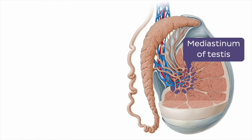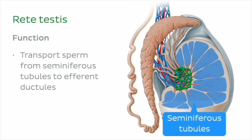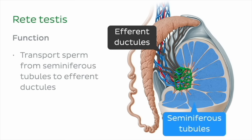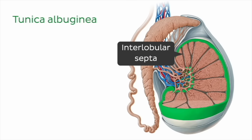Located within the mediastinum of the testes is another delicate tubule network known as the rete testes. The rete testes functions to transport sperm from the seminiferous tubules to the efferent ductules, which we'll meet in a few minutes. Surrounding this network of tubules and septa is a tough fibrous capsule known as the tunica albuginea, which together with the interlobular septa forms the connective tissue framework of the testes.